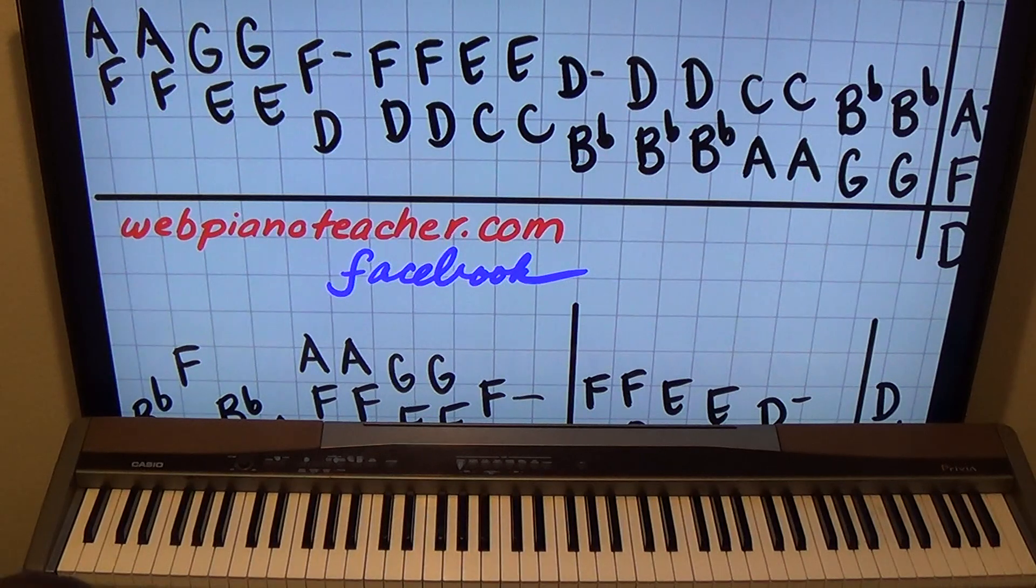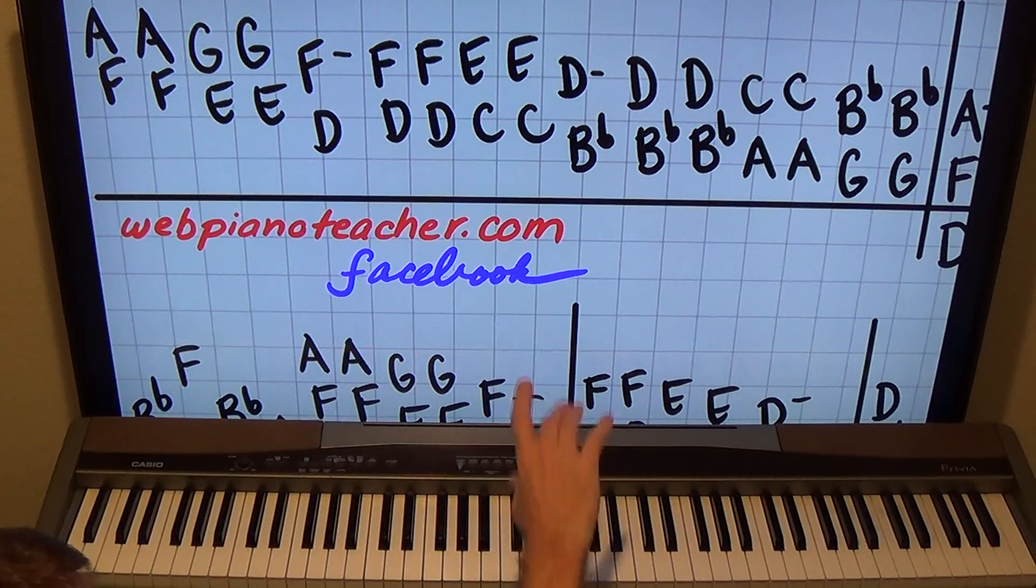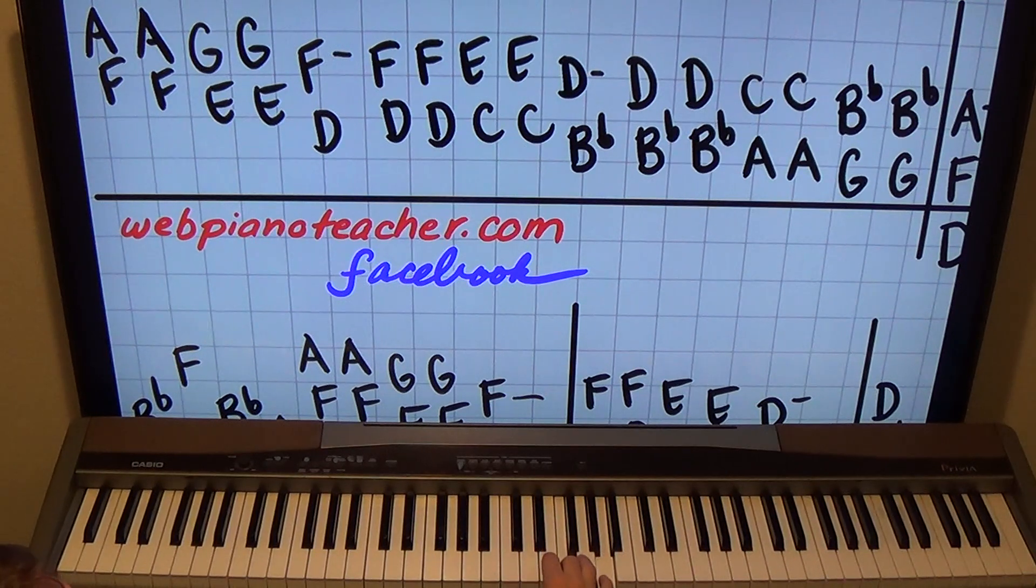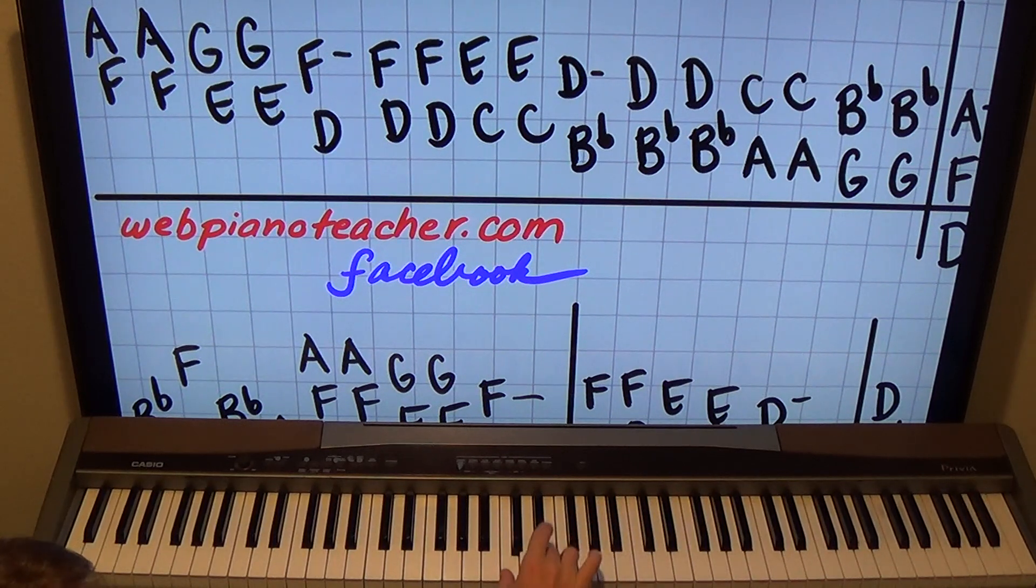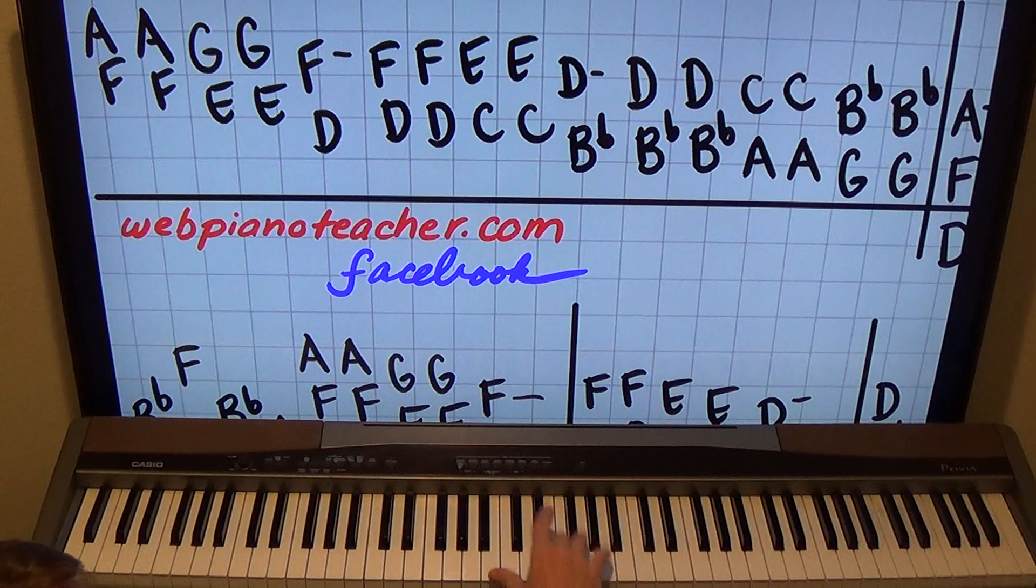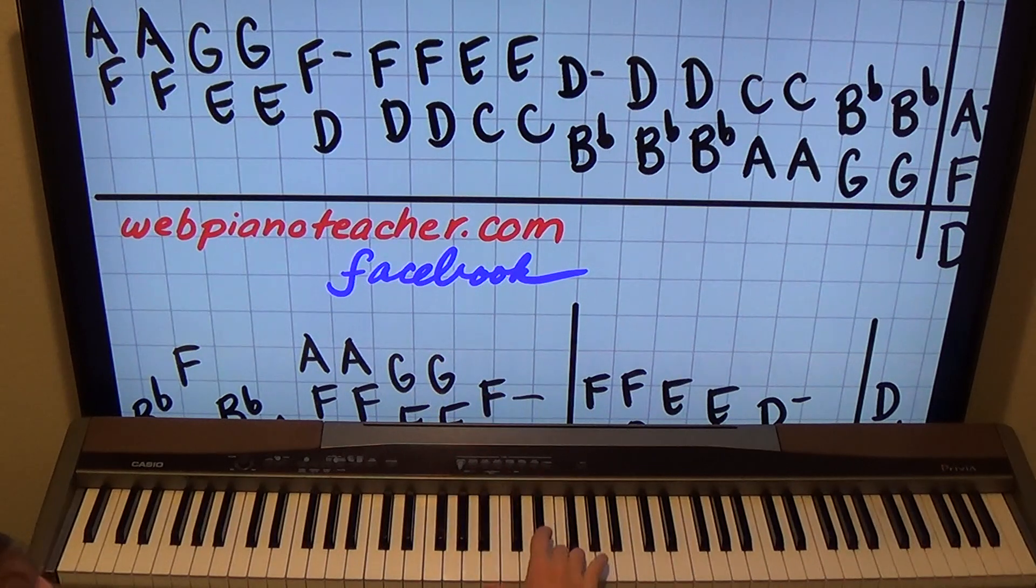So this beginning part we're just going to do thirds, okay? F and A with three and five. E and G with two and four. So don't try to play thirds all with one and three. Some people do that all over the piano, playing one and three. Learn to use those other fingers, okay?